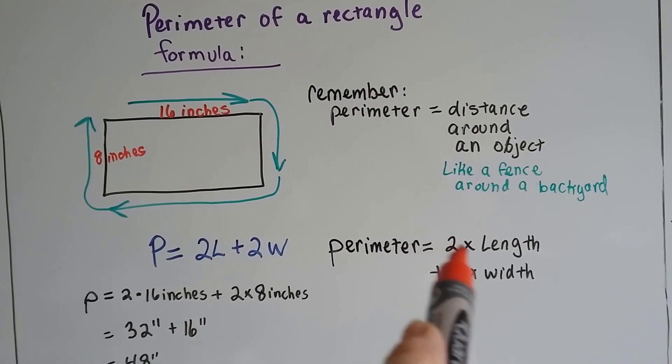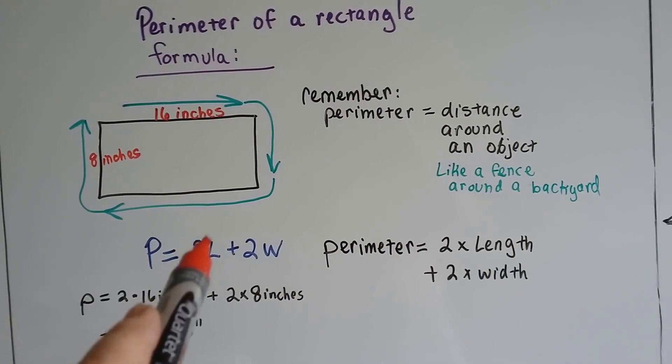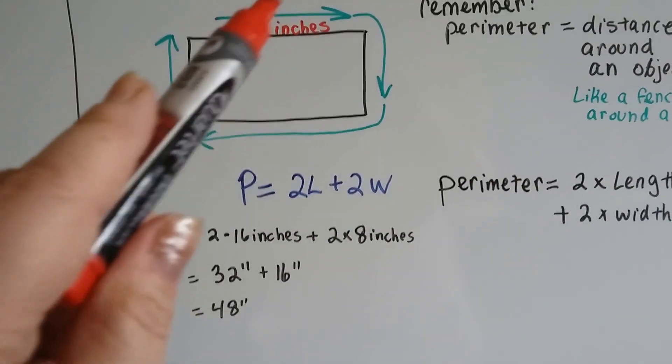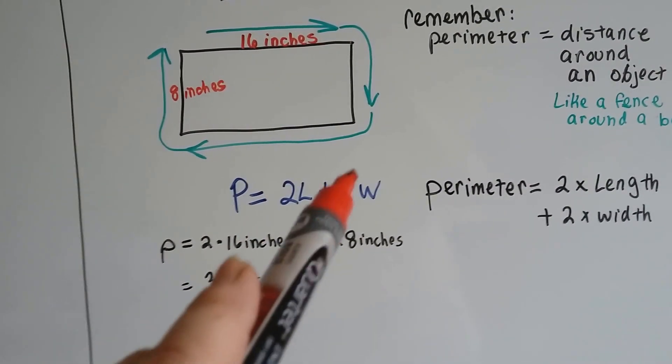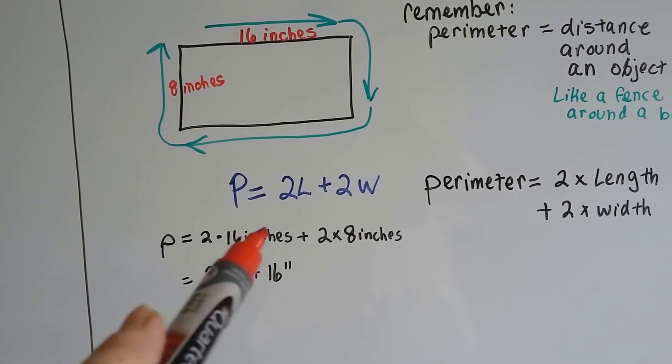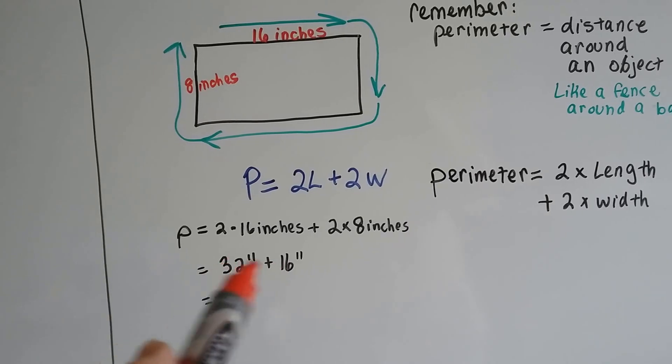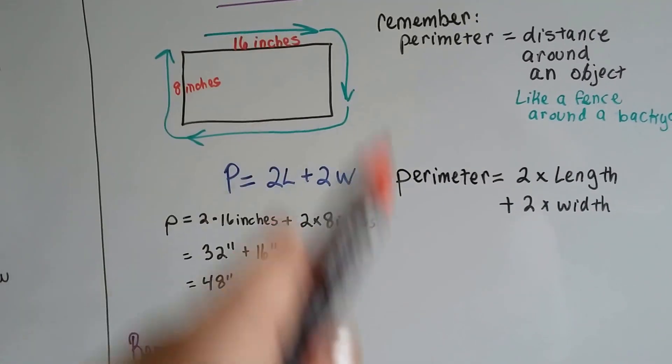the perimeter is 2 times the length plus 2 times the width. Perimeter equals 2 times the length plus 2 times the width. When a variable is next to a number, it means to multiply. So now, if this is 16 and this is 8, we've got 2 times 16 plus 2 times 8. 2 times 16 is 32. 2 times 8 is 16. We add these two together and get 48 inches. Our perimeter around this rectangle is 48 inches.